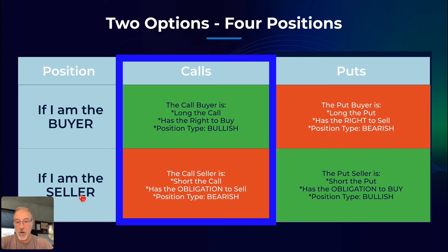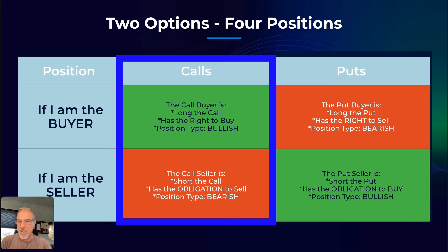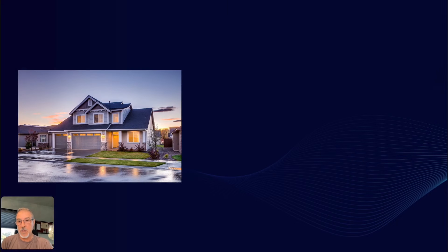I can also be the seller of a call — that is a bearish position. If I'm selling a call, I have an opinion that whatever stock I sold the call against is not going to go higher than my strike price. It could also be considered neutral if I'm selling that call above the current price. And if I'm the seller of a put, I would have an obligation to buy if the price went below a particular strike price — that is a bullish position.